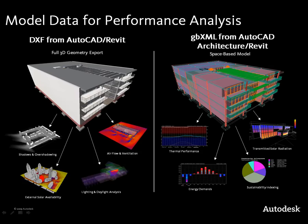Let's talk about moving data into Ecotect Analysis. Ecotect Analysis does have its own 3D modeling capability, but if you're already in a 3D environment in AutoCAD or the Revit products, you can move that data into Ecotect and start using it for analysis. If you're doing analysis that only requires geometry, you can move that using DXF — things like shadowing, lighting and daylight analysis will take advantage of geometry only. If you're looking to do analysis that needs a space-based model, you can use GBXML exported from AutoCAD Architecture, Revit Architecture, or MEP. You'll need this for analysis such as thermal performance or how much solar radiation is being transmitted into a space.